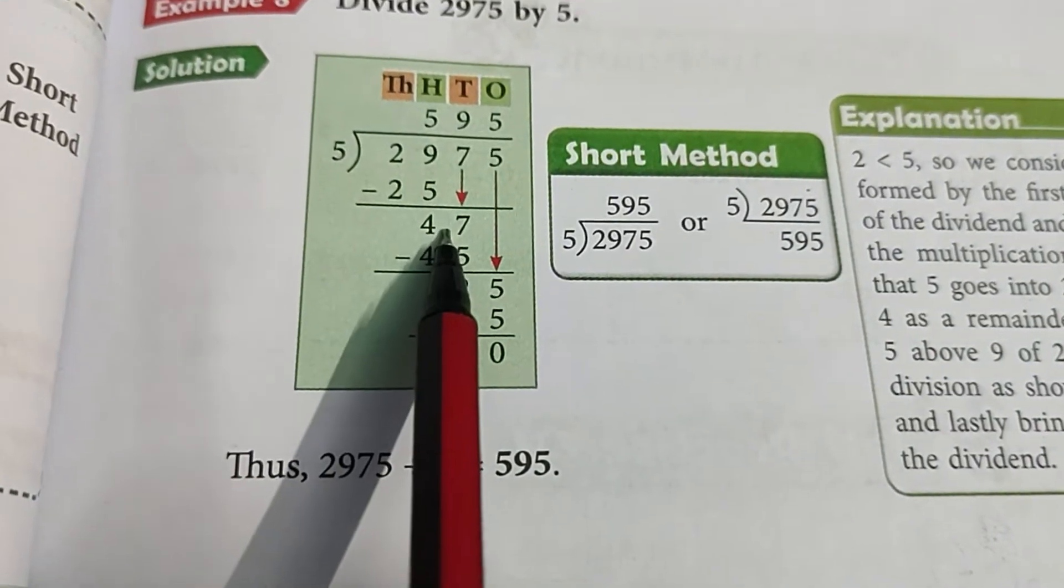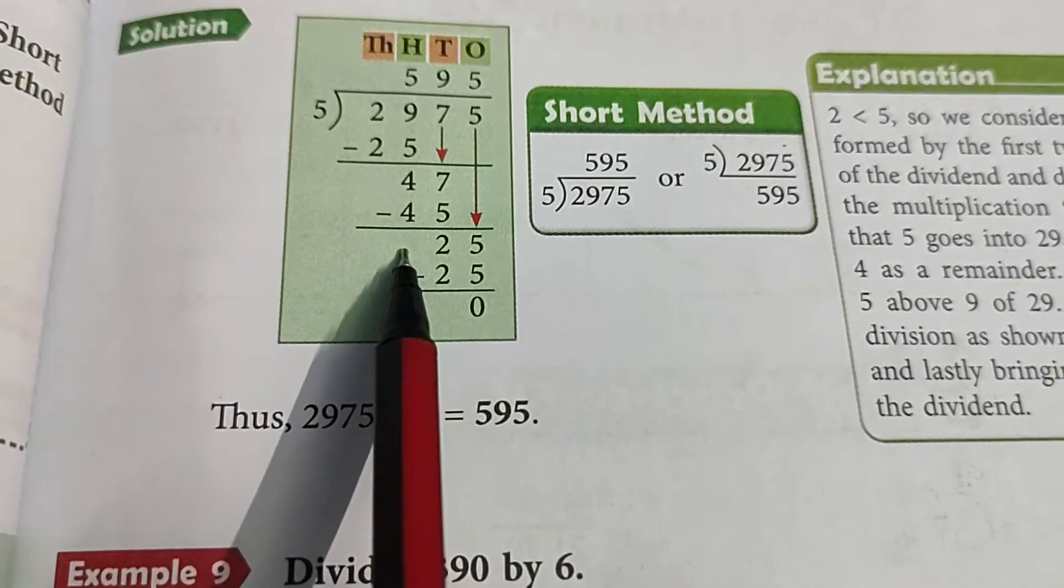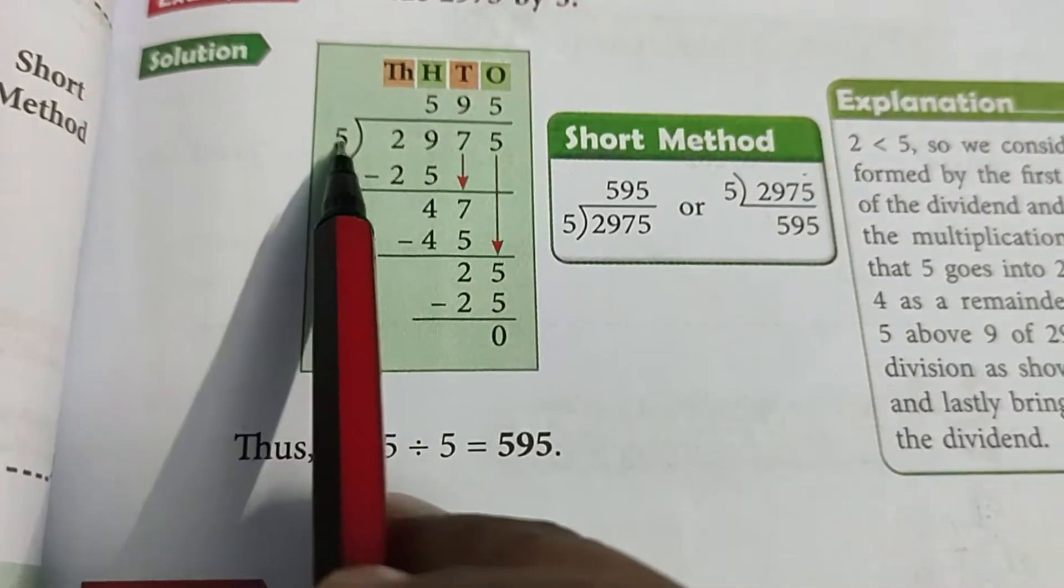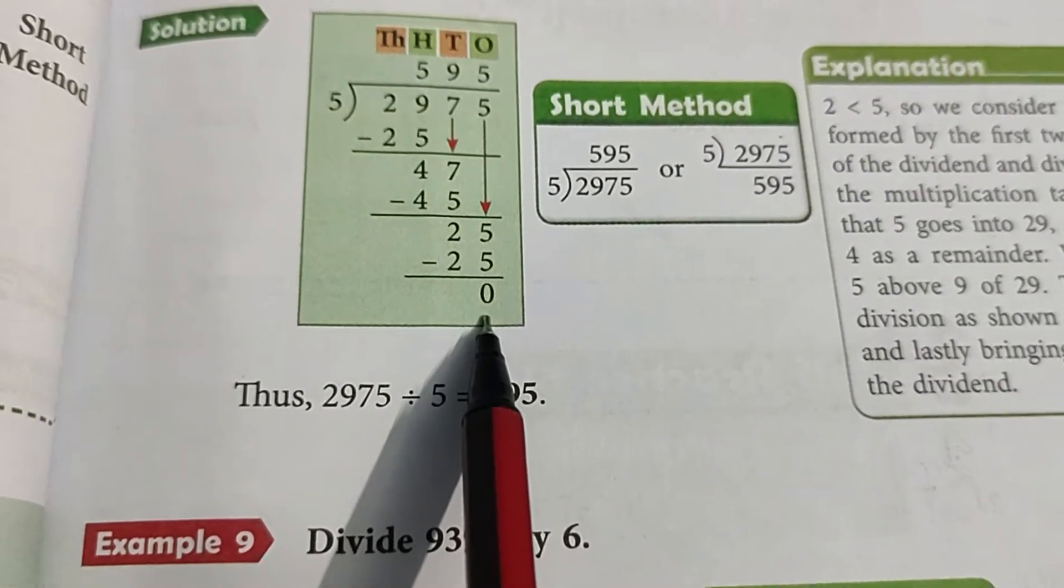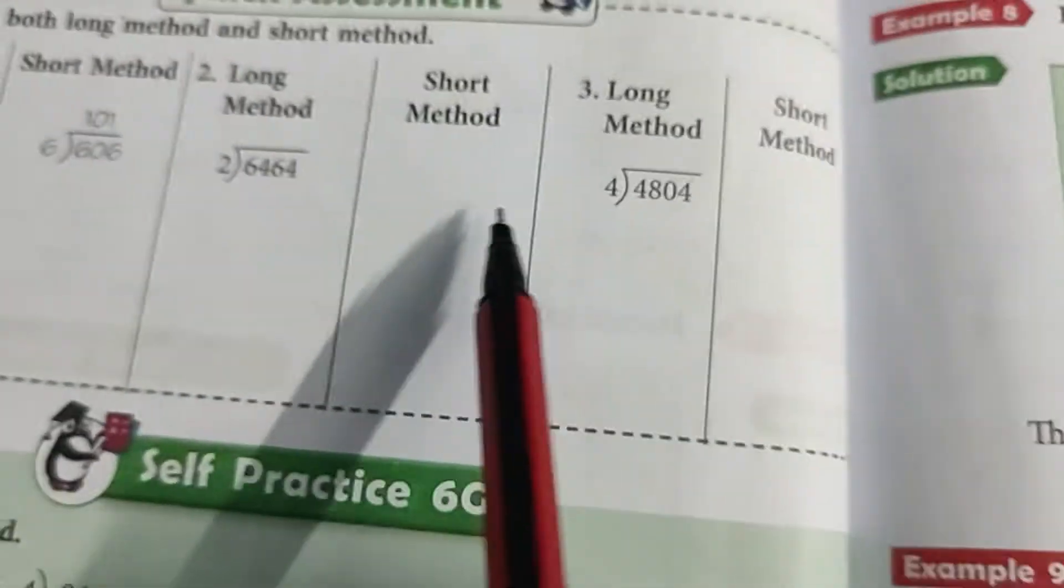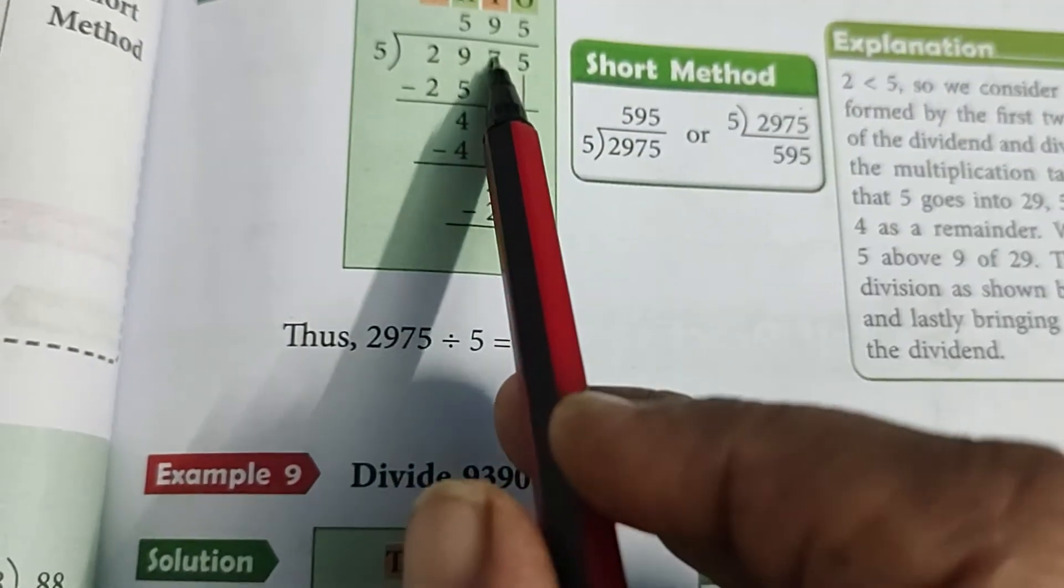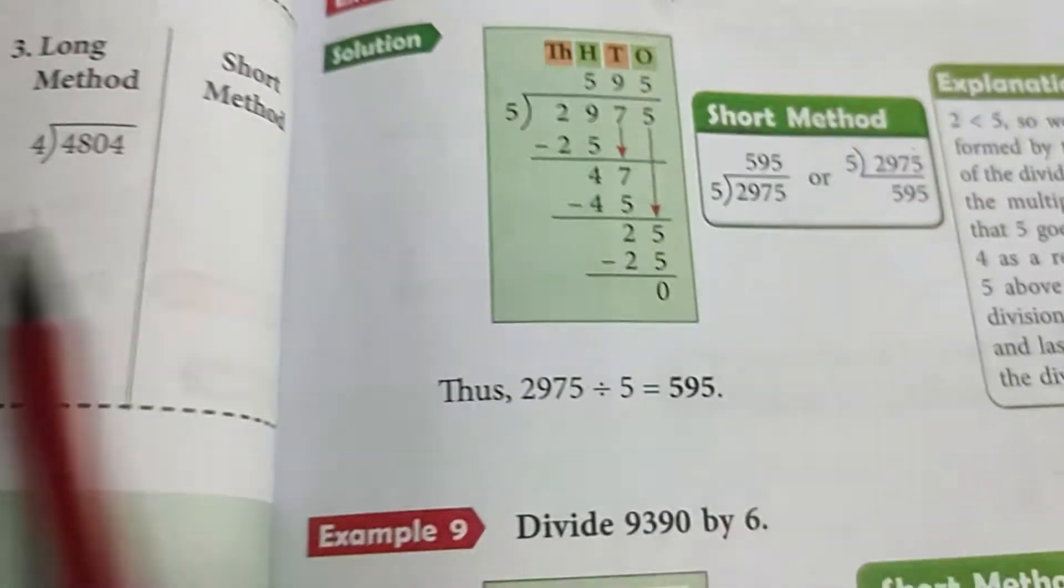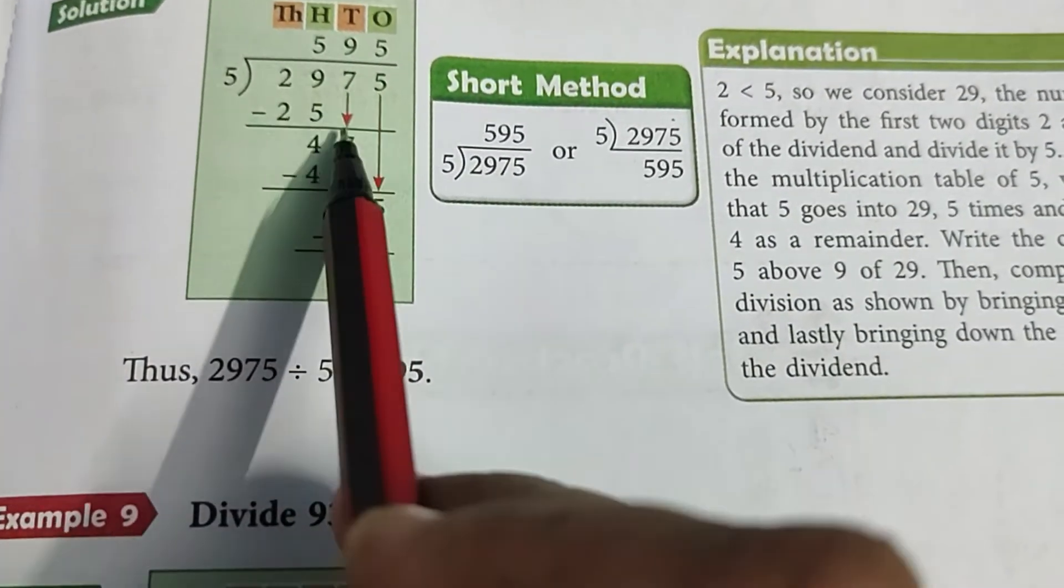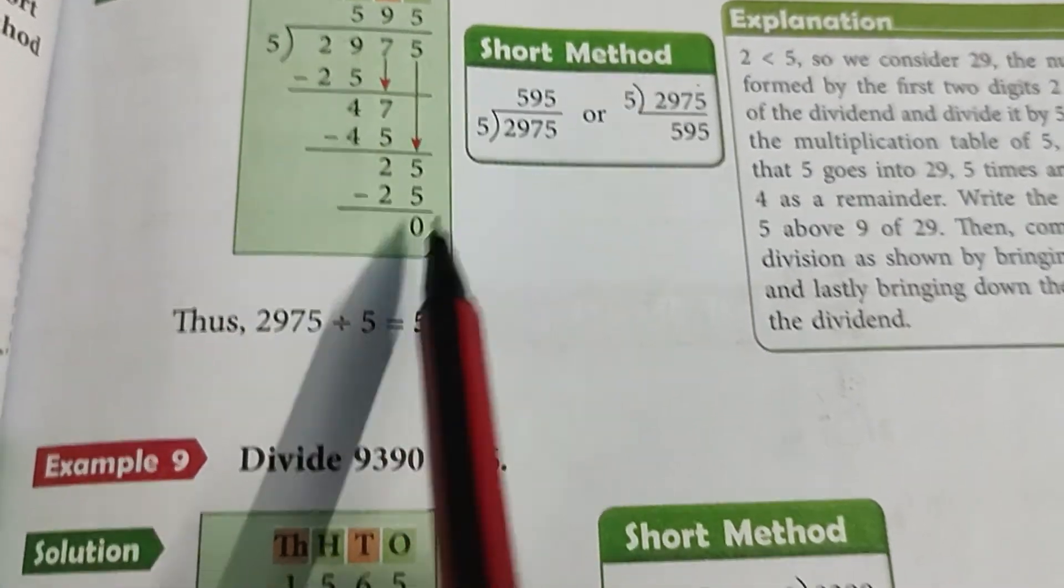Here we will bring down 7. 47 divided by 5, 5×9 is 45. 7 minus 5 is 2 and 4 minus 4 is 0. So here we have 2. Bring down 5, now we will divide 25 by 5. The number must be divided by the number completely. This means the remainder should not be there. In some questions maybe remainder, not in the same way.